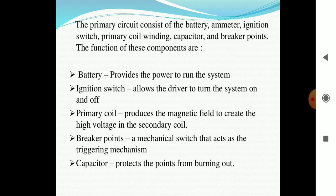The primary circuit consists of the battery, ignition switch, primary coil winding, capacitor, and breaking points. The function of these components are: the battery provides the power to run the system, the ignition switch allows the driver to turn the system on or off.